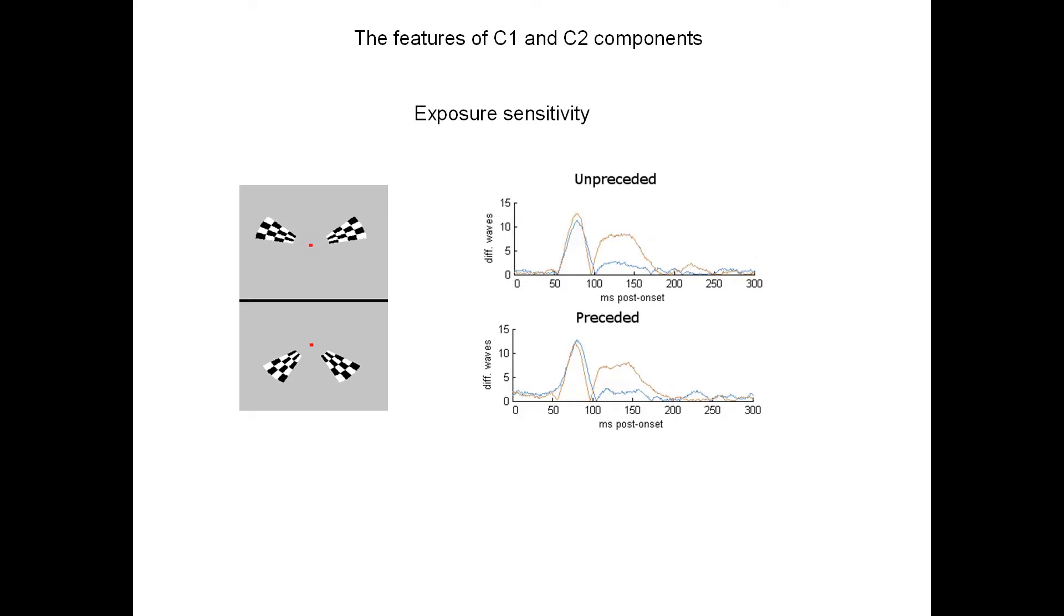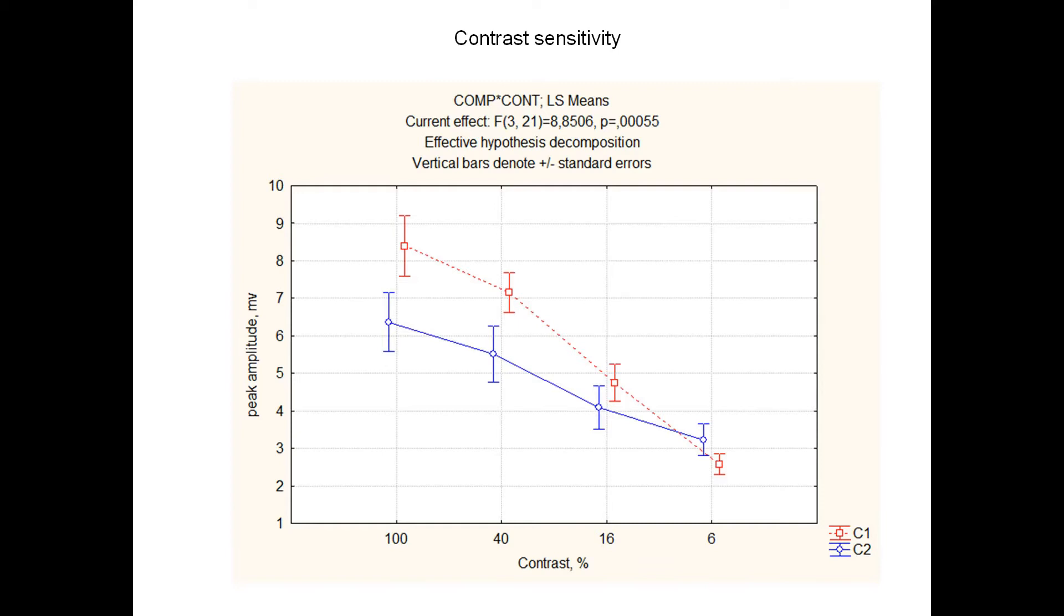A few properties of C1 and C2 that were discovered during our piloting trials and what is known from other studies as well. C1 is much more conservative. It is sensitive to physical properties of the stimulus. Obviously, if you change the contrast or the size of the stimulus, this will affect the amplitude of C1. But C2, like you see on this plot, is sensitive to the exposure. Interestingly, if the exposure of the stimulus is longer, the amplitude of C2 is dropped three times. The contrast sensitivity is also not the same for C1 and C2. C1 is much more sensitive to the contrast, while C2 somehow fills the lack of stimulation with some kind of feedback.